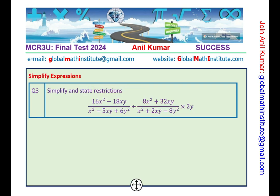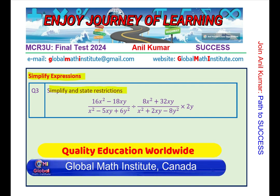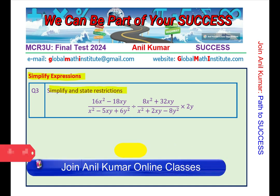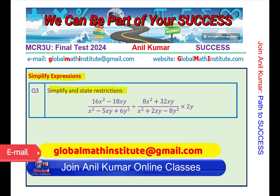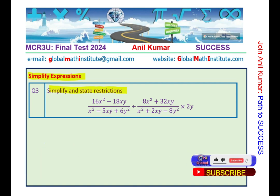Here is the third question. The first two questions were from unit 1 on functions, and now we look into the second unit on algebraic expressions. You need to simplify the given expression which involves factoring, writing restrictions, and skills which will be further exploited. Simplify and state restrictions: (16x² - 18xy)/(x² - 5xy + 6y²) divided by (8x² + 32xy)/(x² + 2xy - 8y²) times 2y.